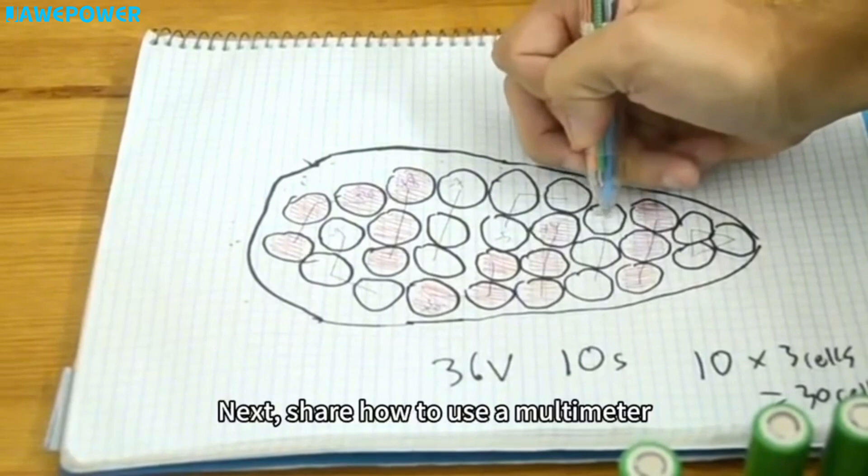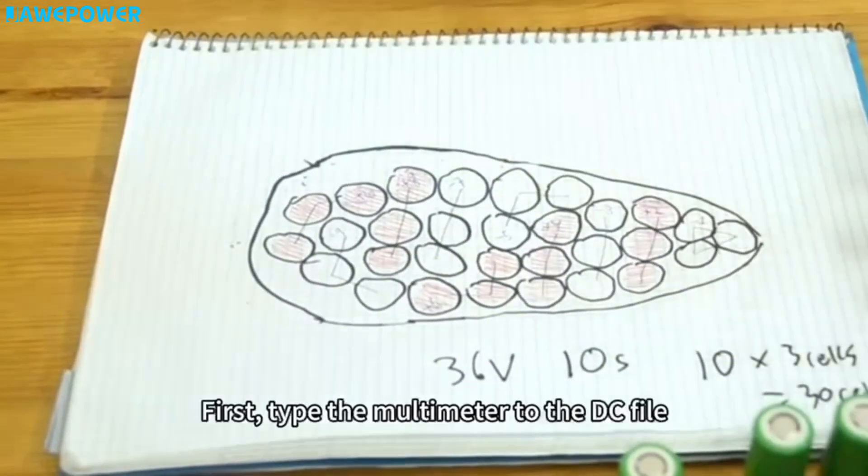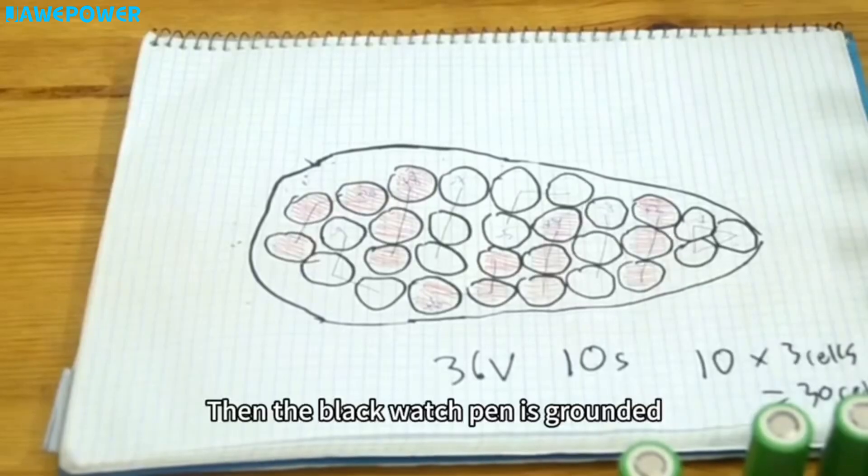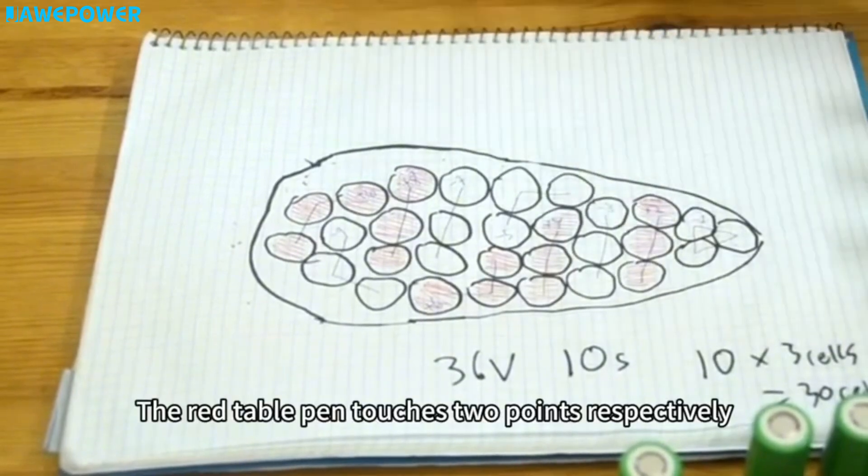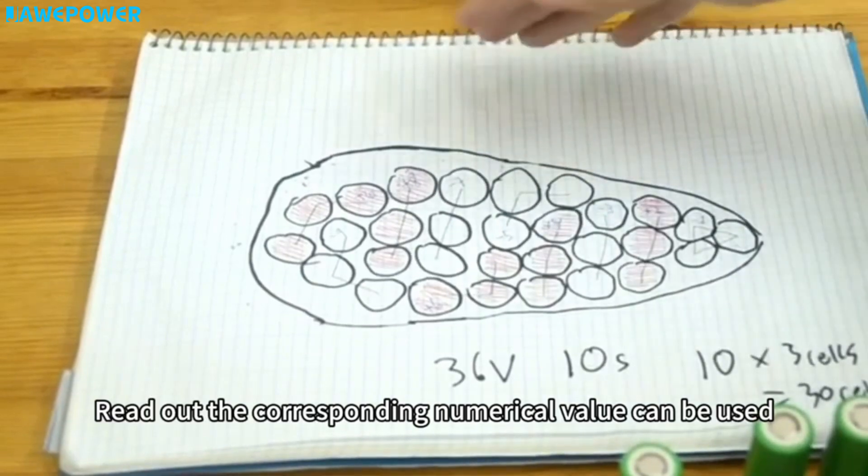Next, share how to use a multimeter to measure the potential difference of the circuit board. First, set the multimeter to the DC file. Then the black probe is grounded. The red probe touches two points respectively. Read out the corresponding numerical value.